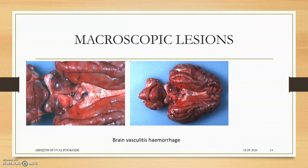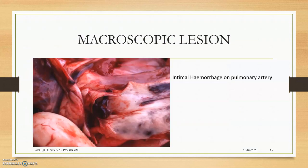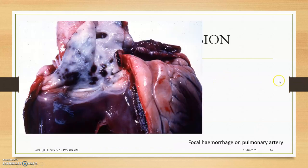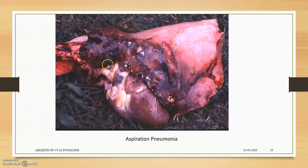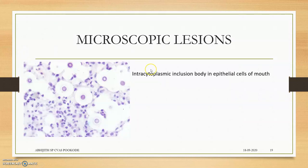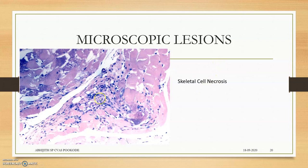Macroscopic lesions include brain vasculitis and hemorrhages. Intimal hemorrhage on the pulmonary artery is a very important lesion in Blue Tongue — subintimal or intimal hemorrhage on the pulmonary artery is sometimes termed the pathognomonic lesion for Blue Tongue. Other findings include hydrocephalus, aspiration pneumonia, focal necrosis, lobular lesions, and intracytoplasmic inclusion bodies in epithelial cells with epithelial cell necrosis.